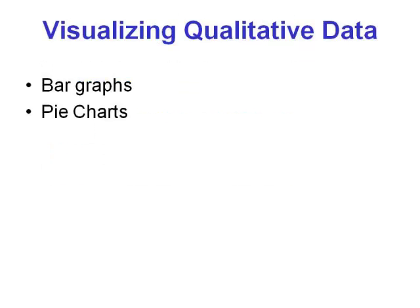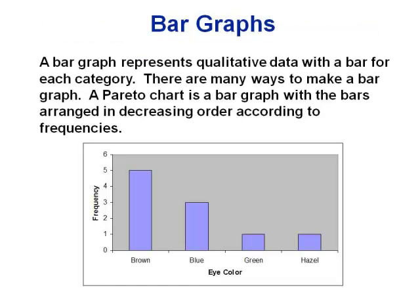For qualitative data, we really have two main choices: bar graphs and pie charts. You've probably seen bar graphs before in the newspaper or wherever. They're pretty straightforward — you have a bar for each category, label them across the bottom, and then the heights tell you the frequency, or how many fall into each group.